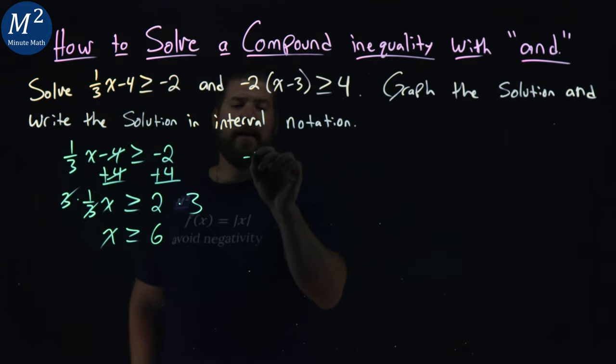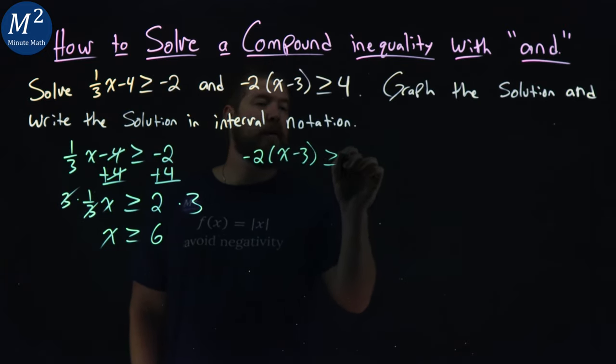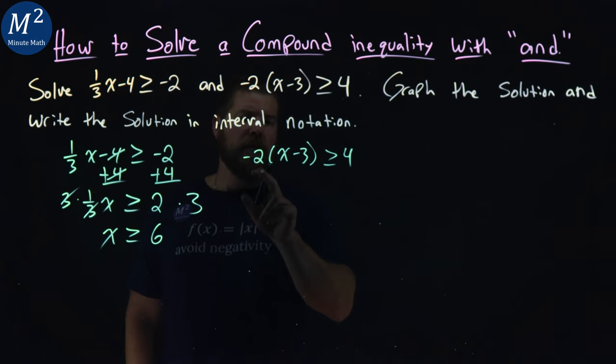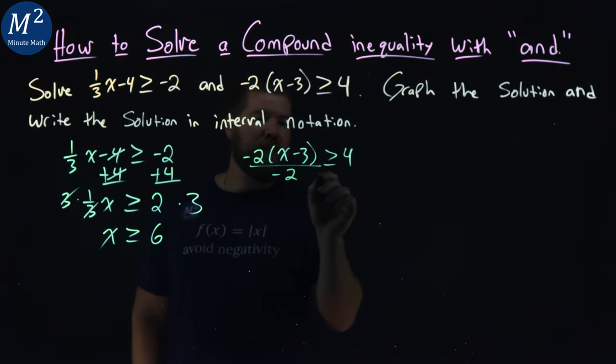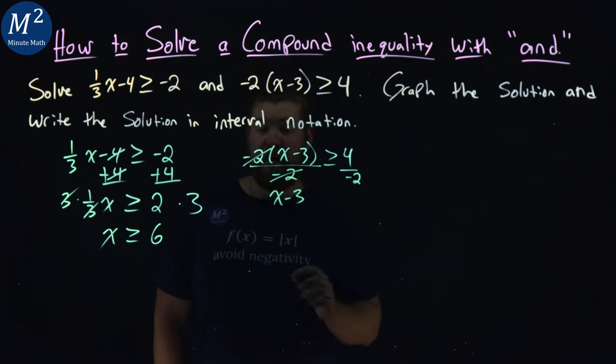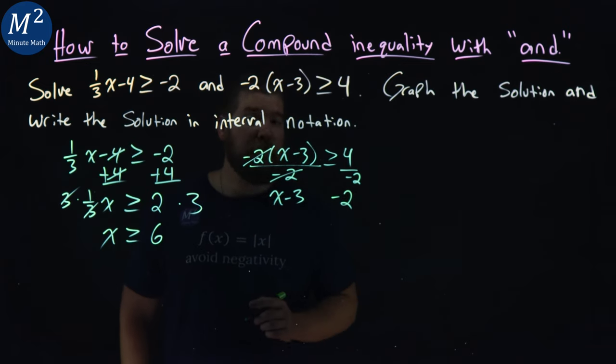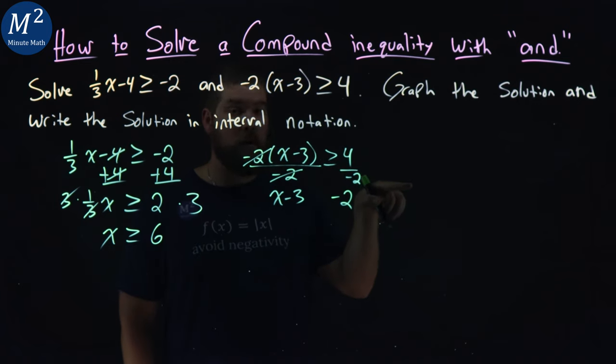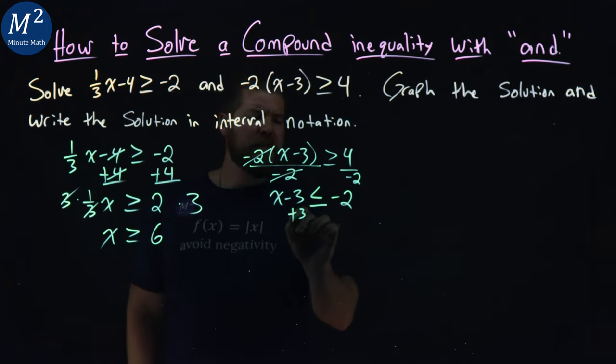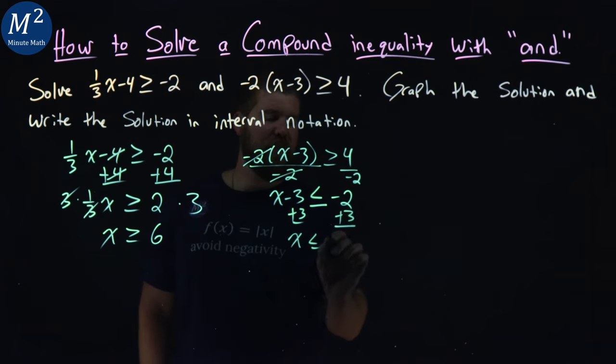Now the next one: -2(x - 3) ≥ 4. We want to get x by itself, so I'll divide both sides by -2. We have x - 3 left on the left. On the right, four divided by -2 is -2. But remember, when we divide by a negative, the inequality flips. Greater than or equal to becomes less than or equal to. I add 3 to both sides, giving us x ≤ 1.